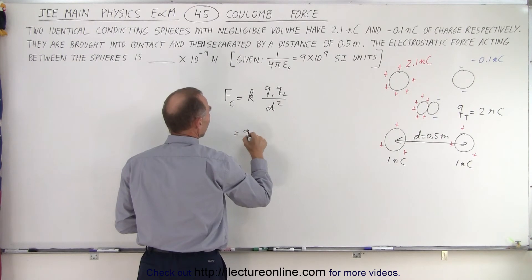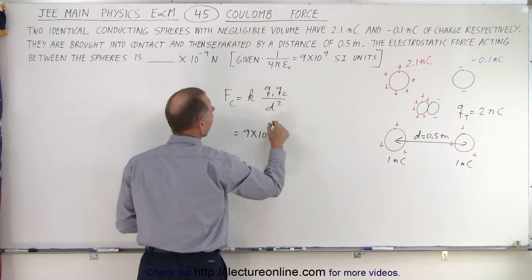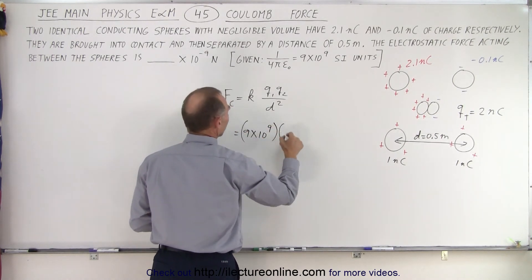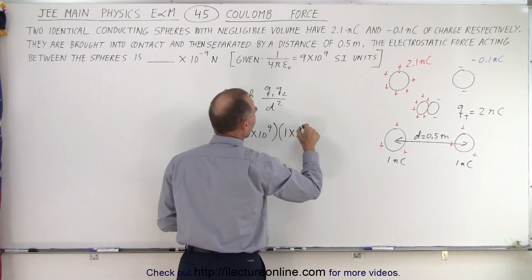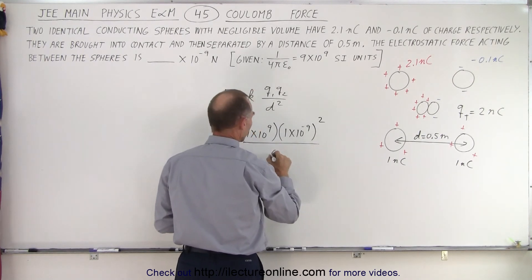k is 1 over 4 pi epsilon sub naught, so it's equal to 9 times 10 to the ninth, and we multiply times q squared, which is 1 times 10 to the minus 9 squared, divided by the distance squared, which is 0.5 squared.